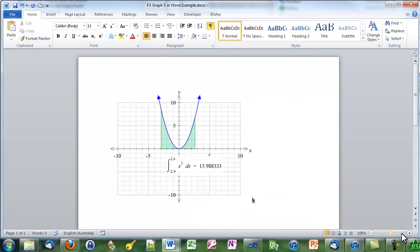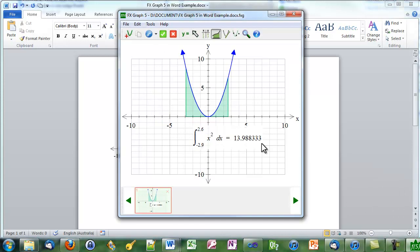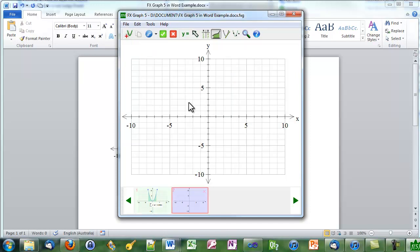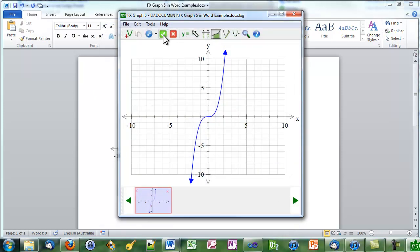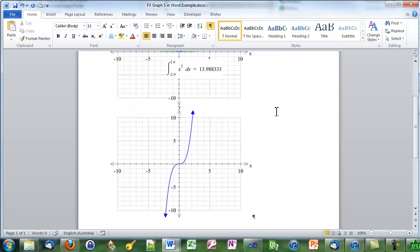To get another graph, go back to FX Graph 5 and this time we'll push the Add Graph to File button. We'll get a new set of axes and graph a cubic. Green tick. Back in Word.